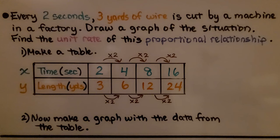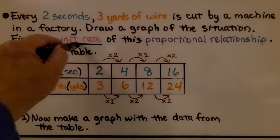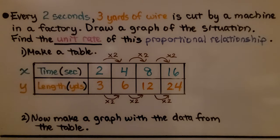Here's our first problem. Every two seconds, three yards of wire is cut by a machine in a factory. Draw a graph of the situation and find the unit rate of this proportional relationship.